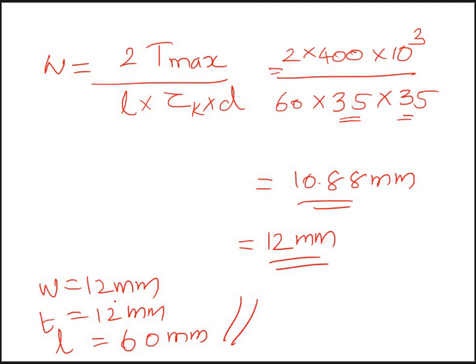So the question asks for the minimum dimensions for the sides of the square key. The minimum dimension is 12mm for both width and thickness. The key dimensions are: width = 12mm, thickness = 12mm, and length = 60mm.